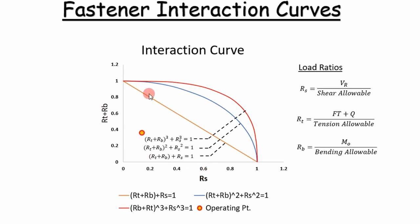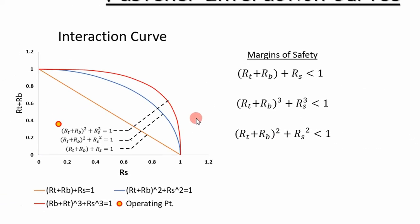We end up with an operating point. As long as this operating point falls below the curve that we're looking at, depending on which one we use, it can change. But if it falls below it, we're good. The next thing to do is to determine a margin of safety. Margin of safety is essentially taking one of these curves that you're evaluating, for example the linear curve. As long as this relation on the left is less than one, we know that our fastener is going to survive the combined loads. We can do it for each of these curves just to emphasize the point.